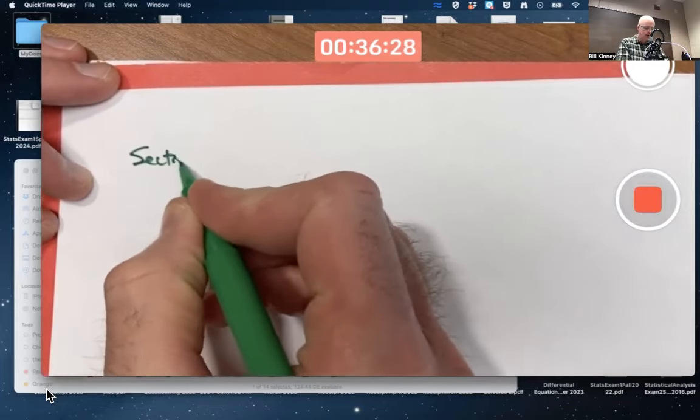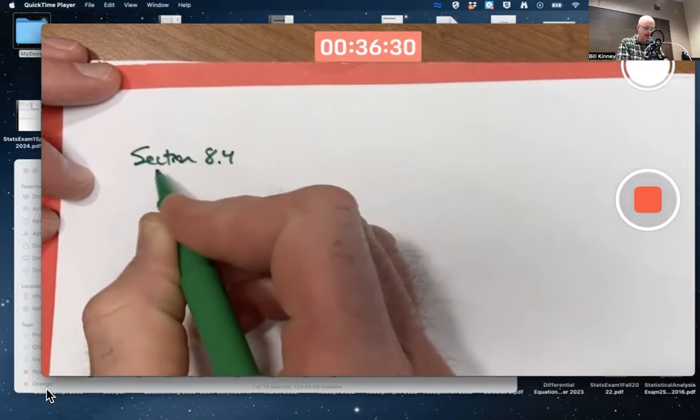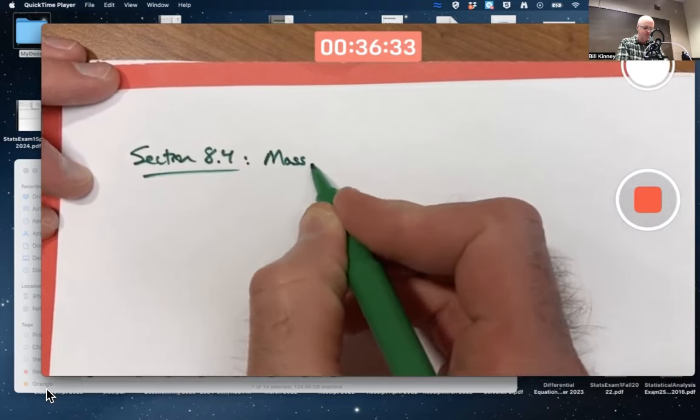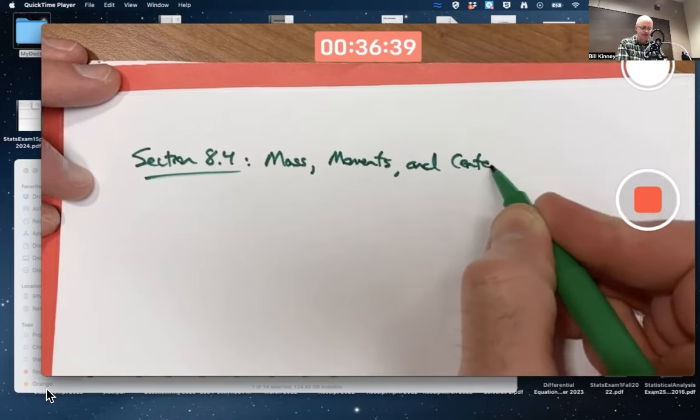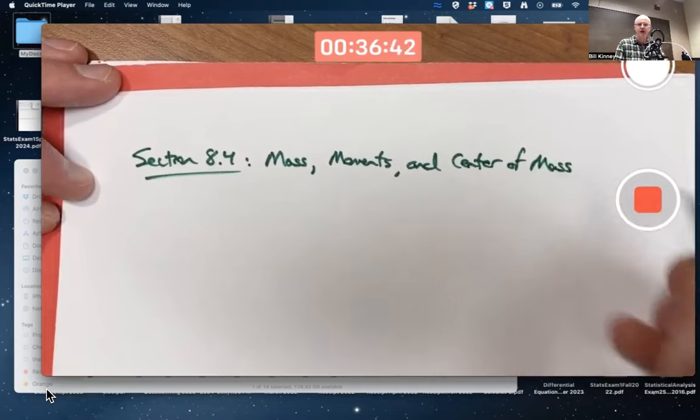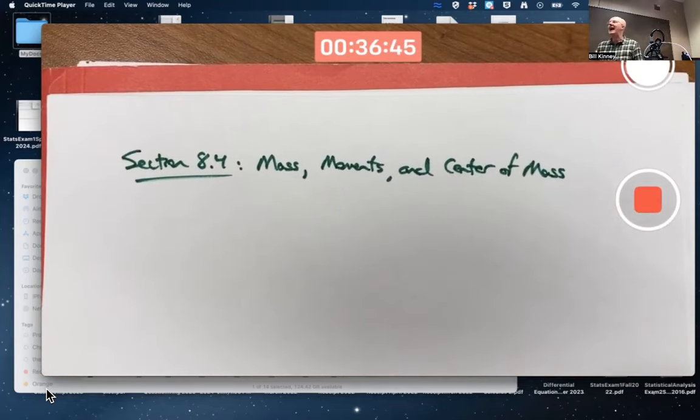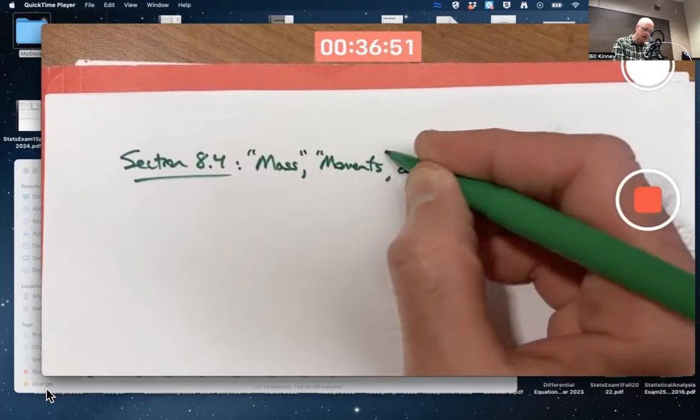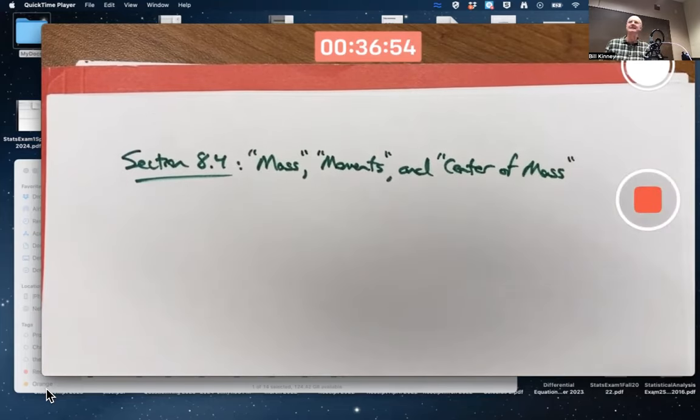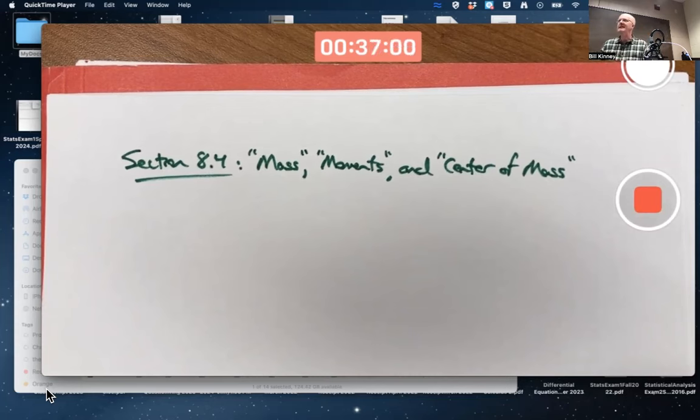Section 8.4 is about mass, moments, and center of mass. However, it's really a bit more broad than that. Because of that, you might want to say mass in quotes, moments in quotes, and center of mass in quotes.